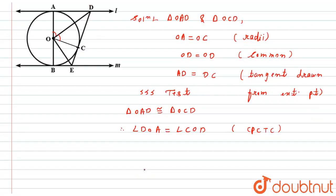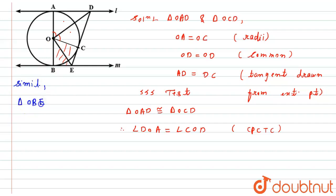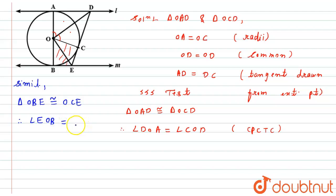Similarly, we can prove that triangle OBE is congruent to triangle OCE. Since these two triangles are congruent, their corresponding parts are equal. Therefore, angle EOB equals angle COE.